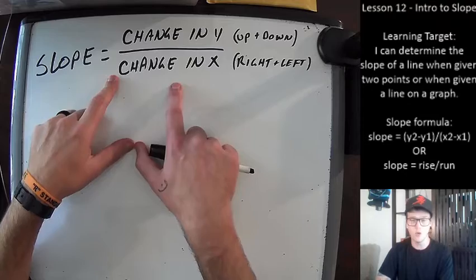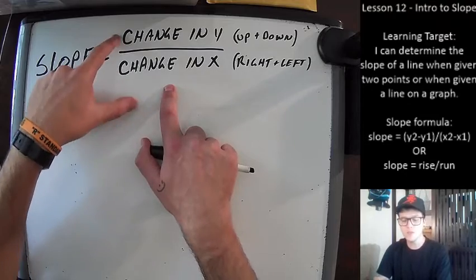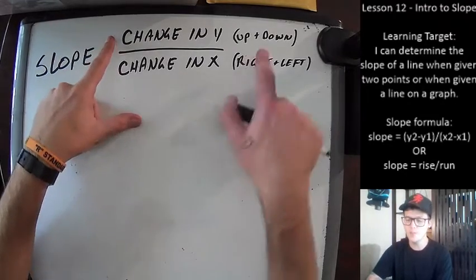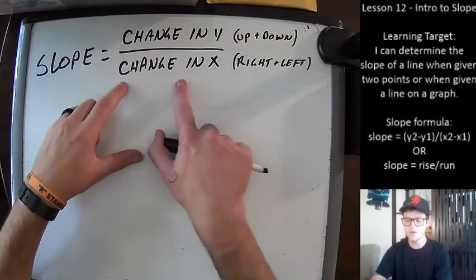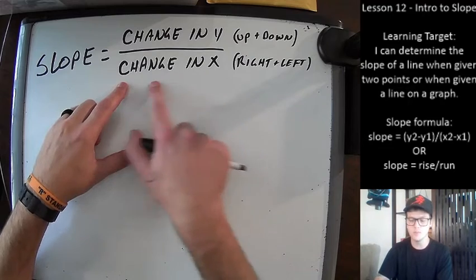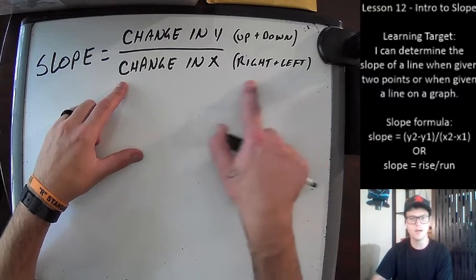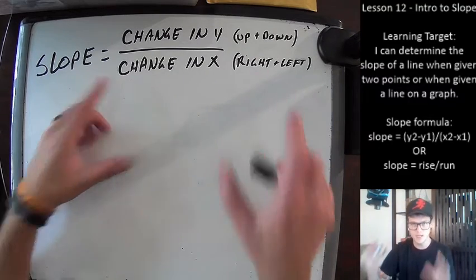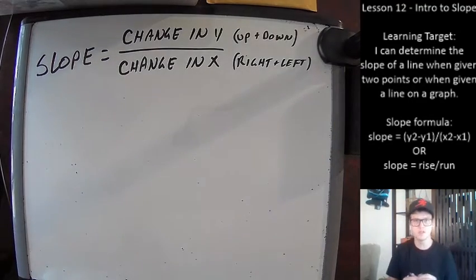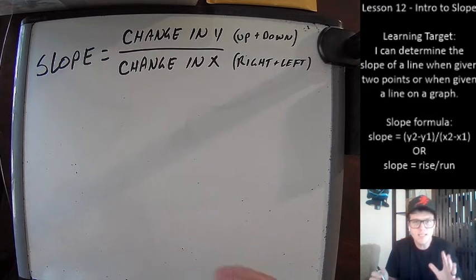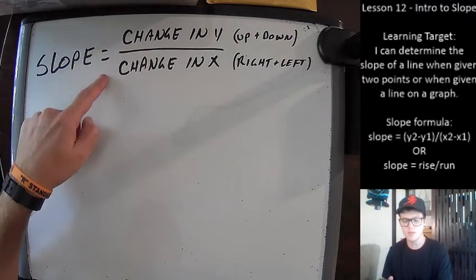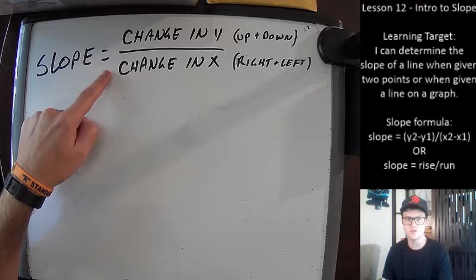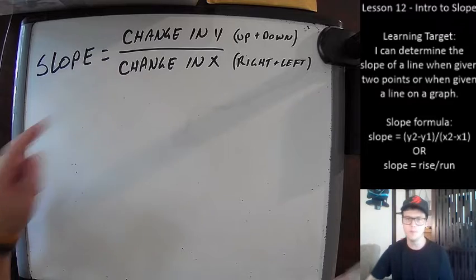However much the line moves up and down is on top, and however much the point moves from left to right is on the bottom. Just think of it this way: the change in the y values goes on top, and the change in the x values goes on the bottom.